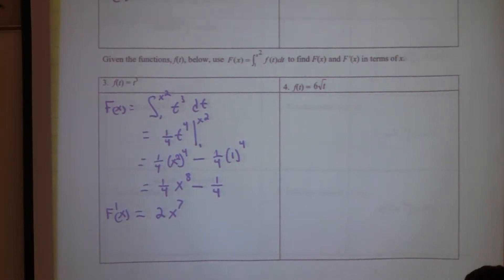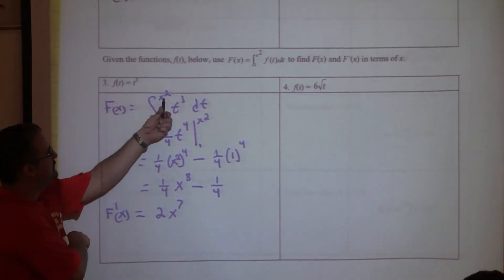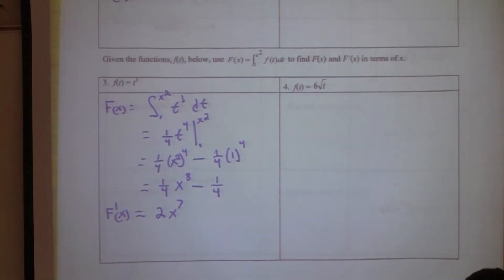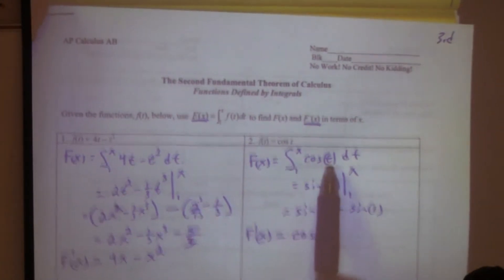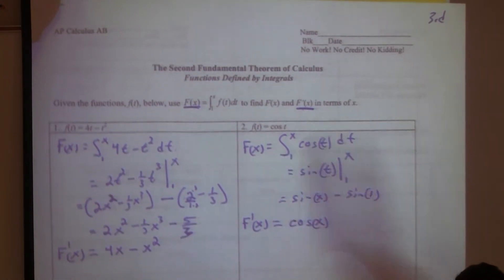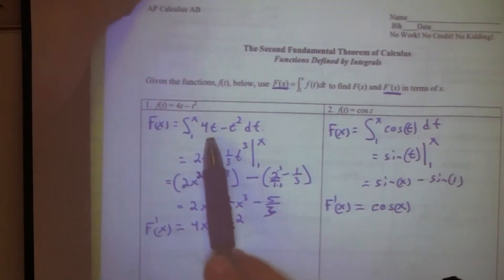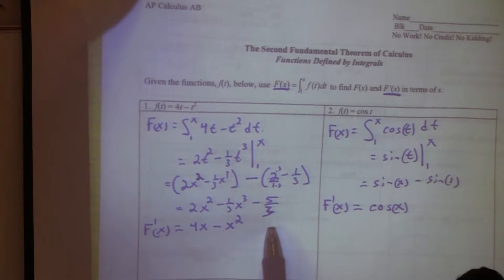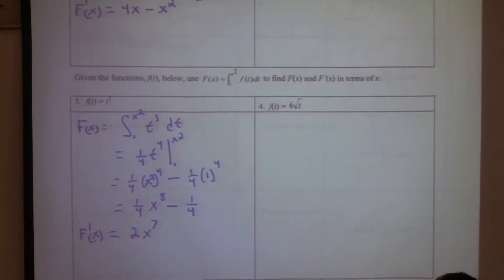Did it work to just plug in x like before? If we plug in x squared into the original integrand, we'd get x squared cubed, which is x to the sixth. But we need 2x to the seventh — we're missing a factor of 2x. Where does that come from? The derivative of x squared is 2x. So you plug in the upper limit and multiply by its derivative. Does that same logic work for the cosine example? Plug in x, get cosine of x, times the derivative of x, which is 1 — yes, it works. Maybe that's the Second Fundamental Theorem.